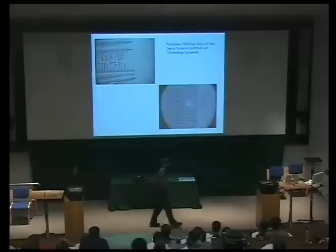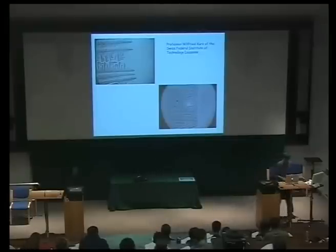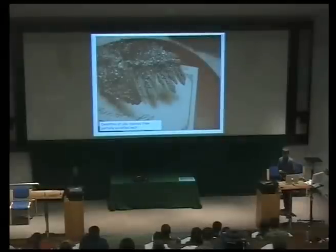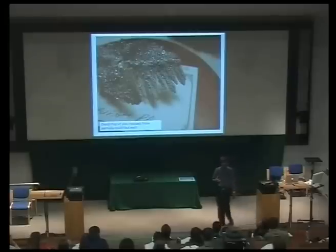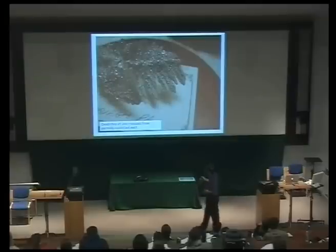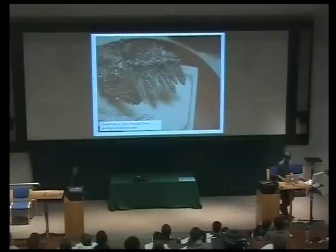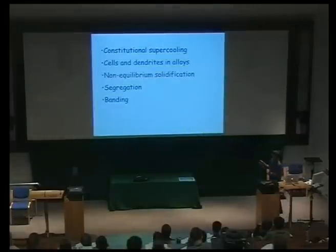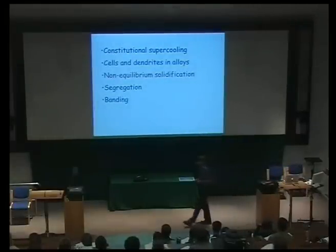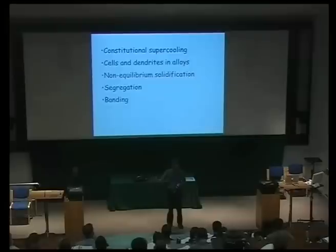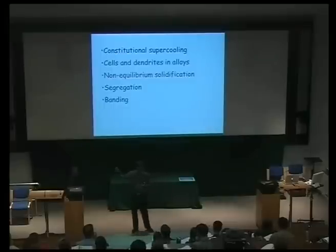So you have dendritic solidification, cellular solidification, and then the interface moving in a stable way as a flat interface. This is a zinc alloy that was partly solidified and then the liquid dispensed off, and you can see beautiful dendritic structures in three dimensions from a metallic material.